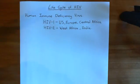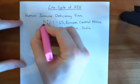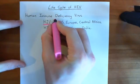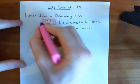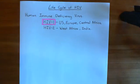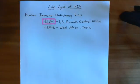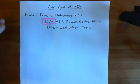Usually when people say HIV and don't clarify which of the two types they mean, they will be talking about HIV-1. This entire video is really going to be on the life cycle of HIV-1. Most of it is applicable to the life cycle of HIV-2 as well, but HIV-1 is the more common infection in the human population, so we're going to study HIV-1. We'll start off then with the structure of an HIV-1 virus particle.